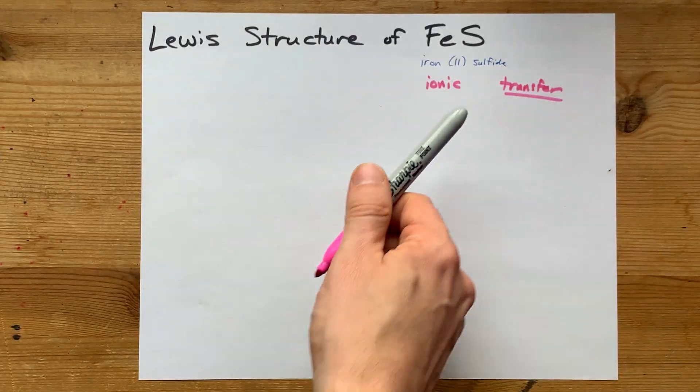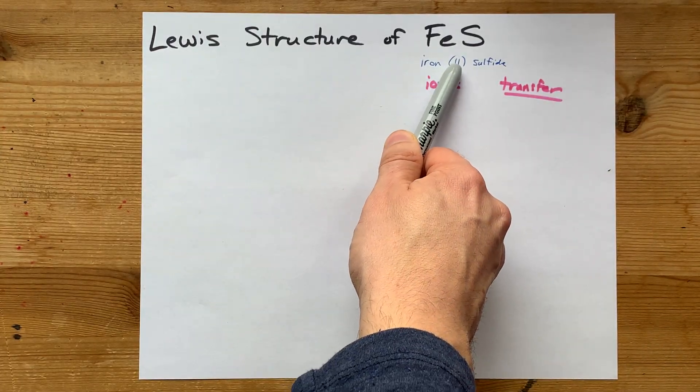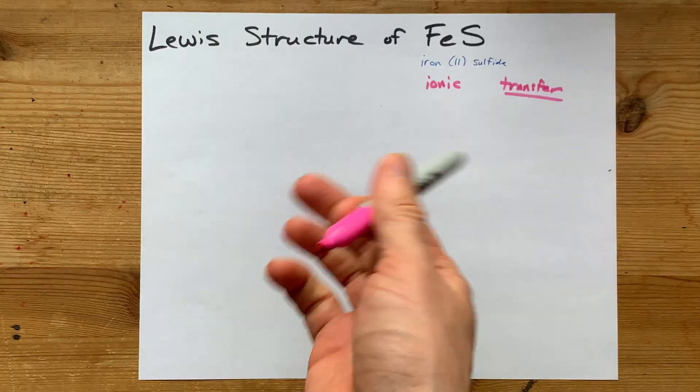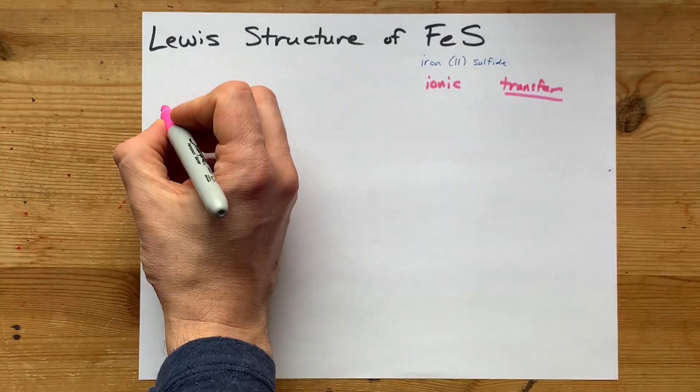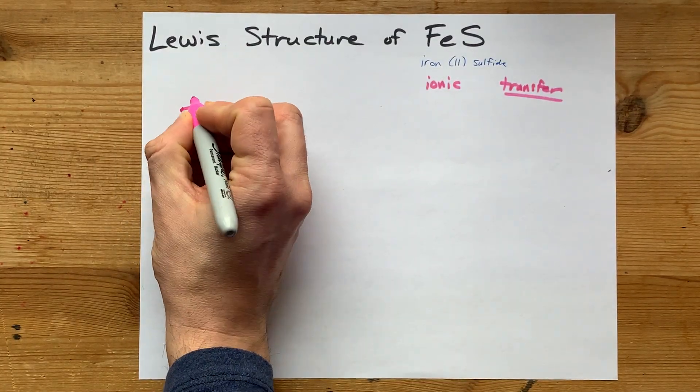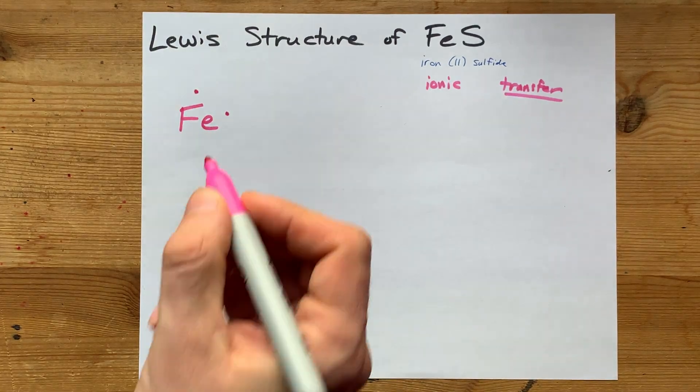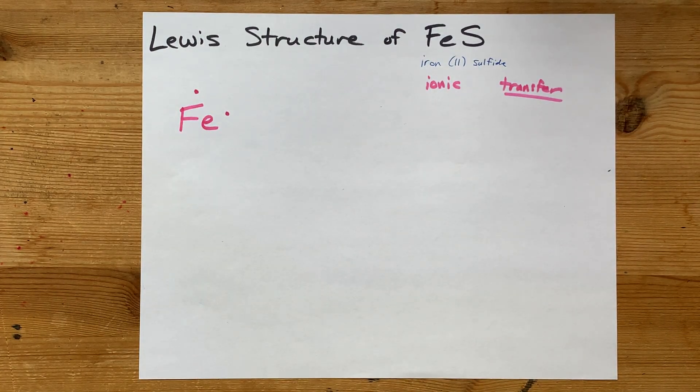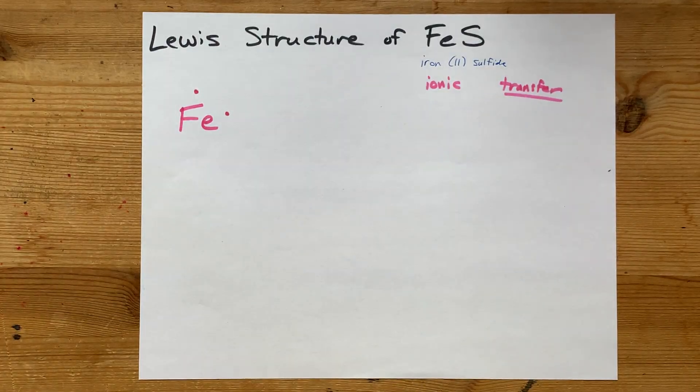What you're going to do is take whatever valence your chemical is, because in this case it's iron 2 sulfide, and you're going to simply give it that many valence electrons. There's my Fe, and there's the two valence electrons that it's going to eventually give away.